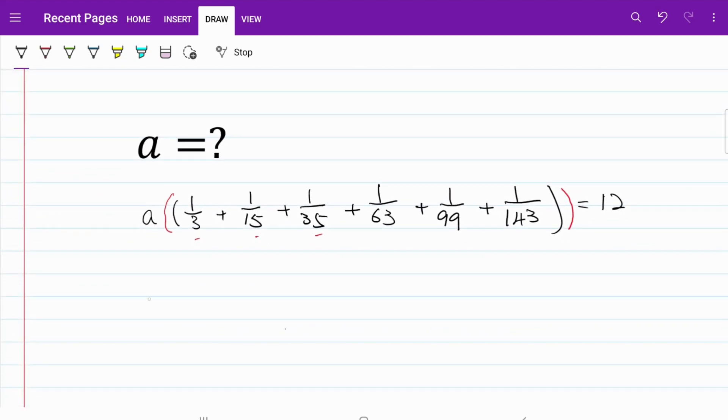First of all, I have 1 over 3 which is equal to 1 over 1 times 3 which can be expressed as half of 1 over 1 minus 1 over 3.